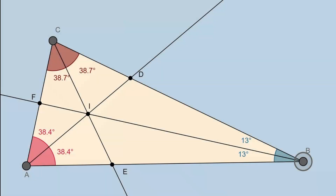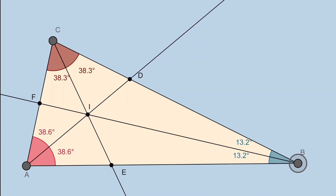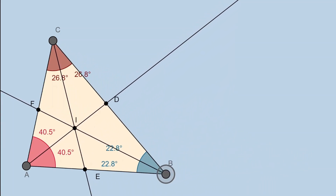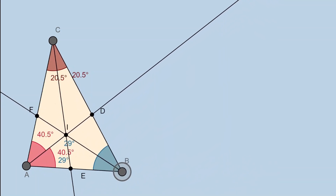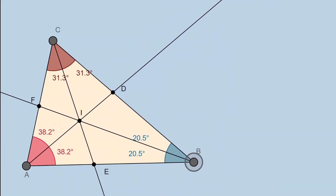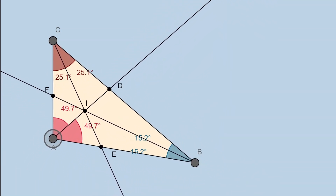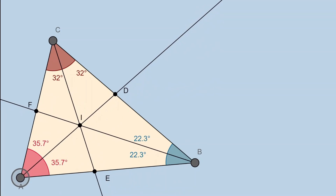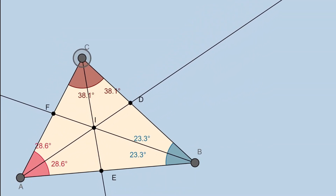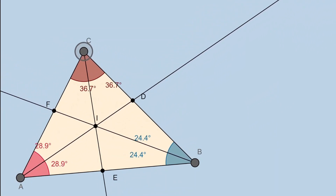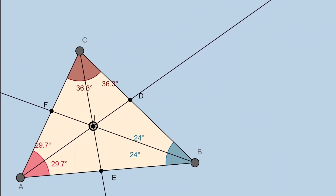Notice that here we have the incenter and we can see that all those angles are cut in half. Regardless of how we define our triangle — no matter where the vertex goes — one thing always remains true: the intersection between those lines always happens inside the triangle.